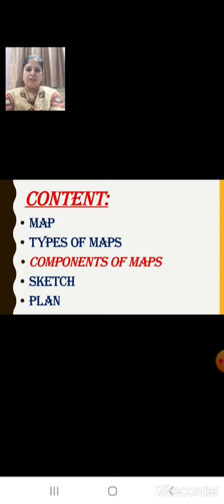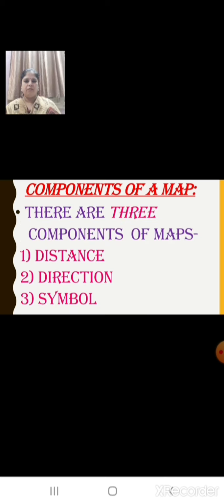Today we shall learn about the components of maps. There are three components of maps: distance, direction, and symbols. The first one is distance, the second is direction, and the third one is symbol.